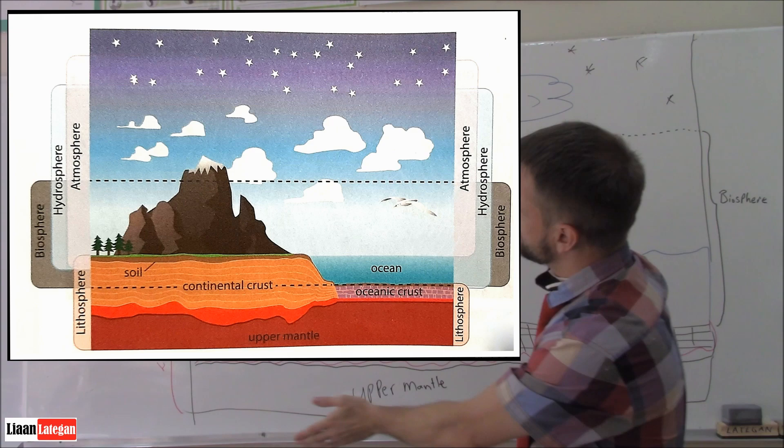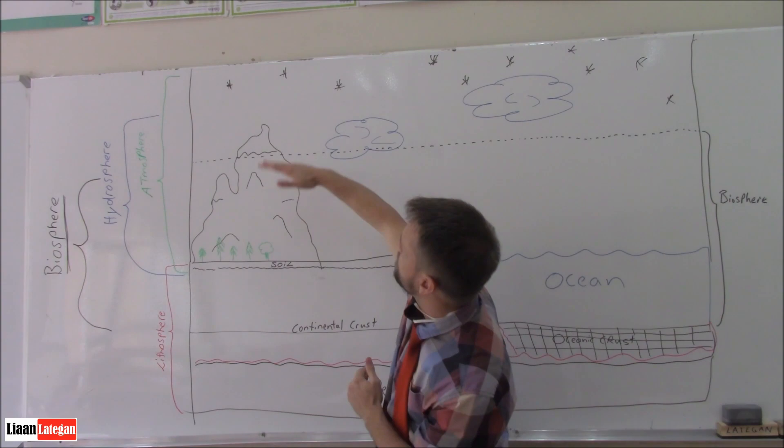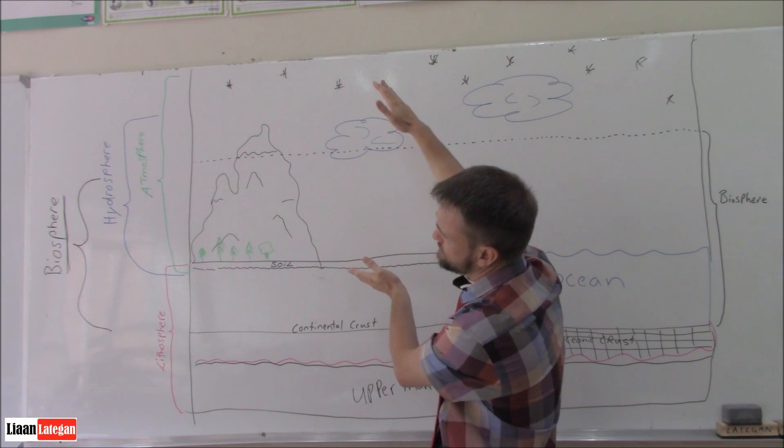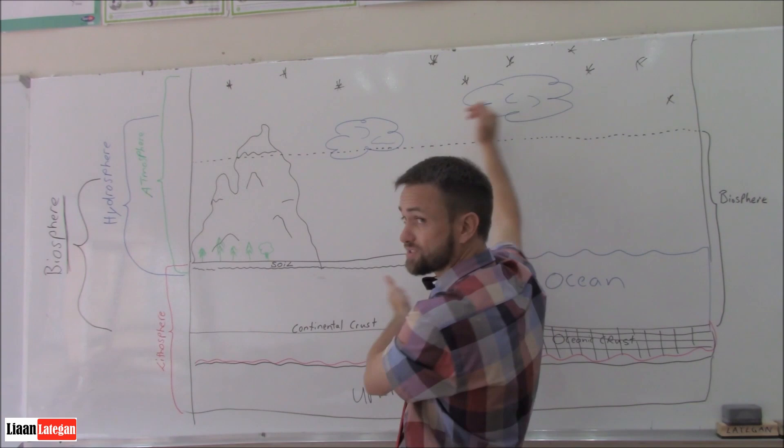So the atmosphere is basically looking at the biosphere from the soil all the way up until the night sky. Above the mountains, above everything else. That is your atmosphere. The hydrosphere is where you find water molecules. So the ocean falls underneath the hydrosphere.